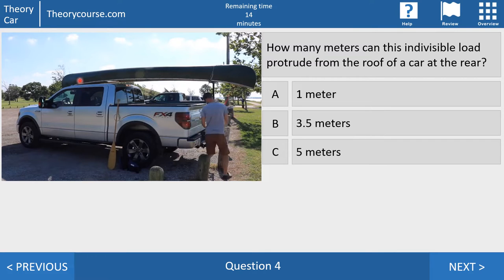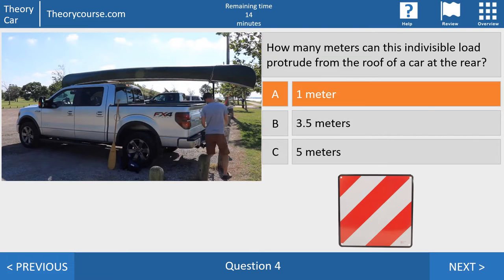Question number four. How many meters can this indivisible load protrude from the roof of a car at the rear? Is one meter, 3.5 meters or five meters? The right answer is one meter. At the rear of a car indivisible load may protrude one meter. And at the front of a car also the load may protrude one meter. So one meter at the back, one meter at the front. And on the side, you must know it by now, correct 20 centimeters. And a red-white marking sign like this is never required if your load is protrude on a car. Only on a trailer but that you will see in another question.